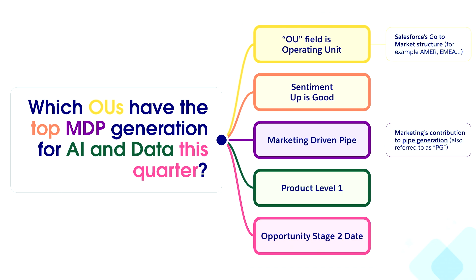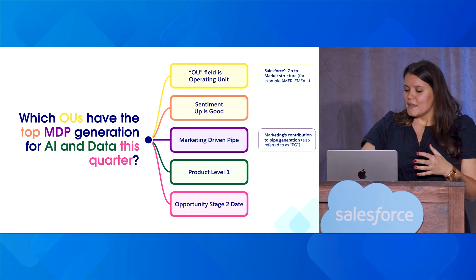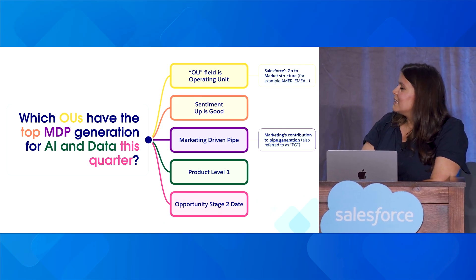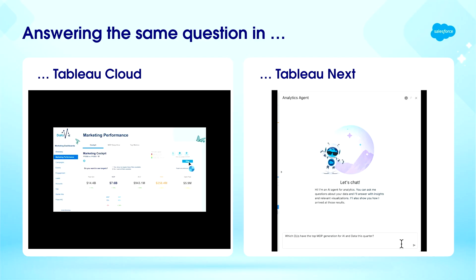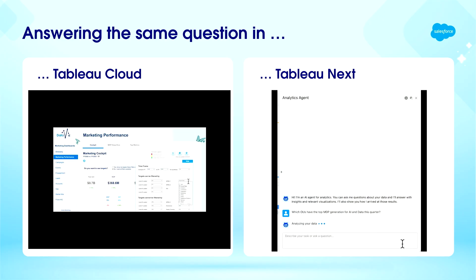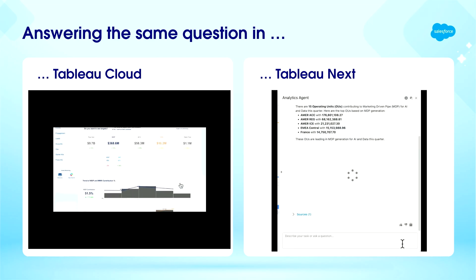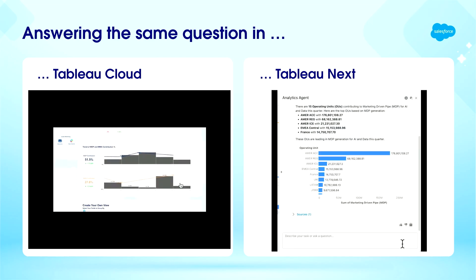Here are two ways you can get an answer to this question. On the left-hand side, you'll see the traditional method — one of our dashboards. You have to know which dashboard to use, then it's a multi-step process: apply all your filters, knowing what each refers to, and find your answer. On the right-hand side, you have Tableau Next. You just ask that question exactly how it was phrased. The agent will think about it, consult its knowledge base, and give you the answer. It will even build you a graph.